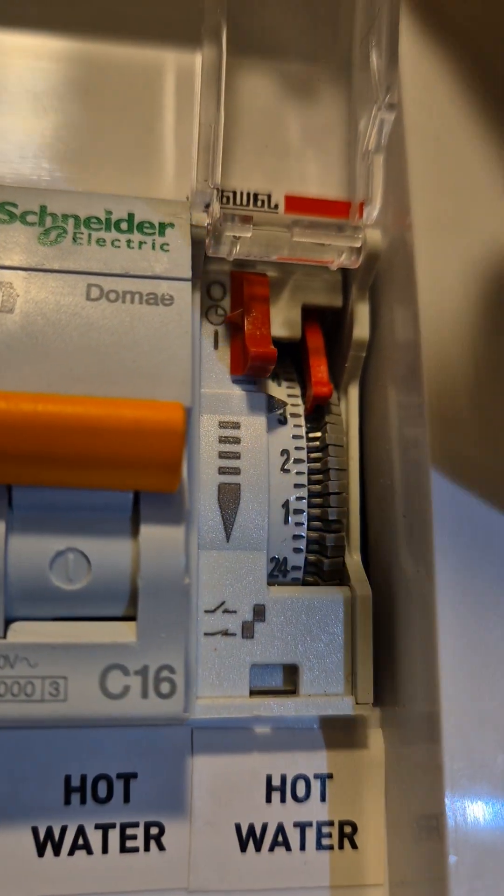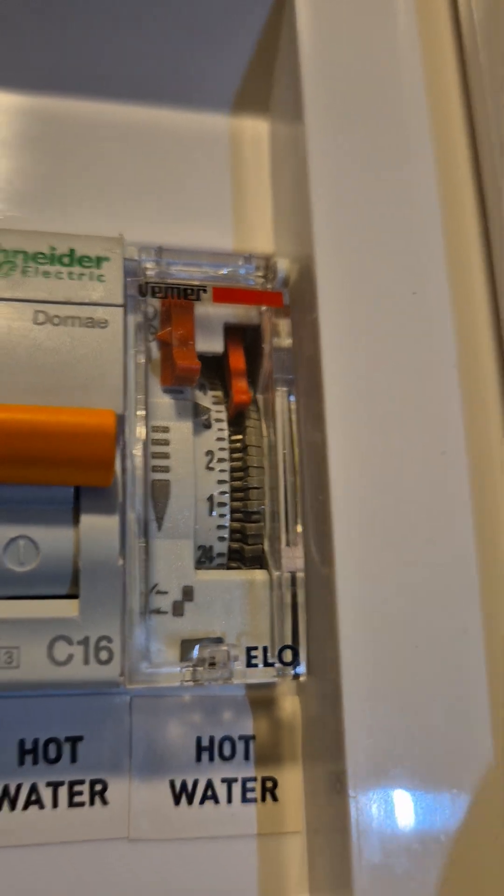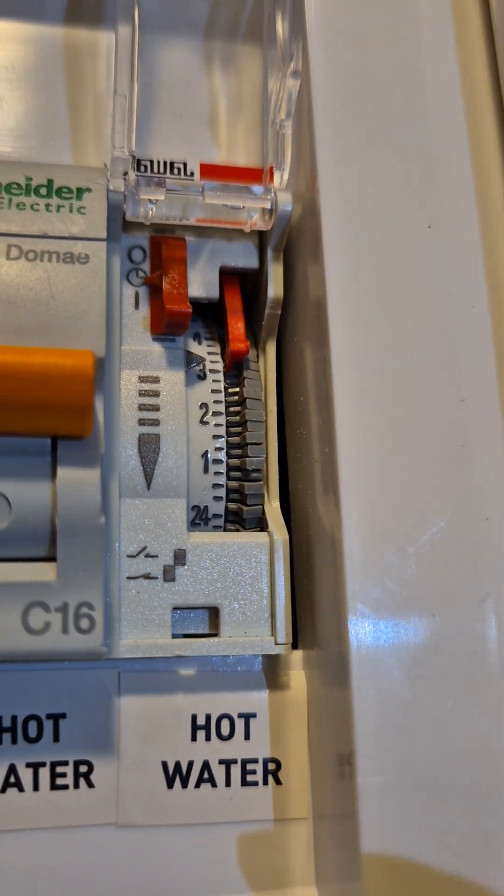Here's a little video tutorial of the ELO hot water timer. This is in the switchboard there, and we've got a little cover on here. Using a pen is a good idea, you can flick that cover up.